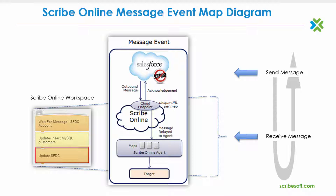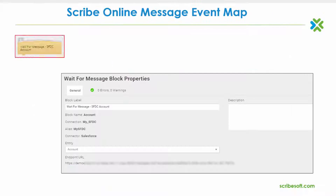As in a request-reply map, the URL endpoint is auto-generated after the ScribeOnline message map has been initially completed and saved. This URL can be located within the general tab of the initial wait for message block properties.